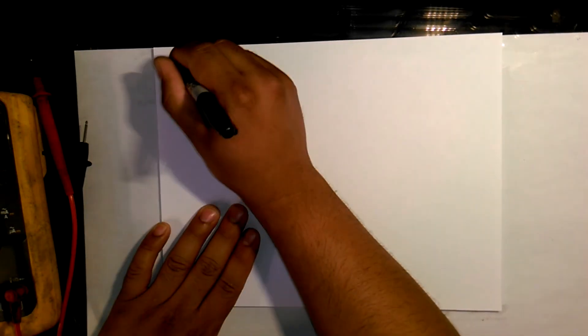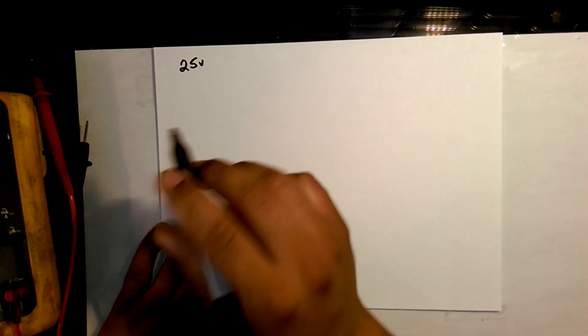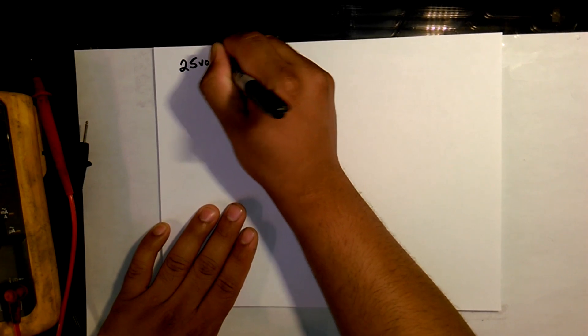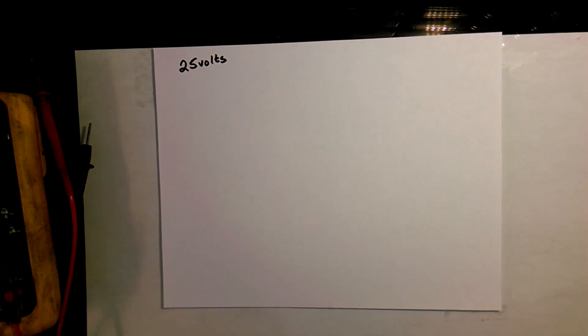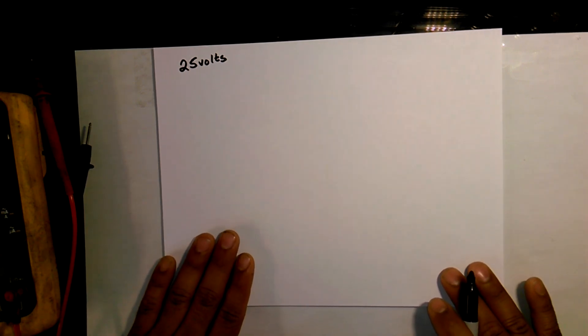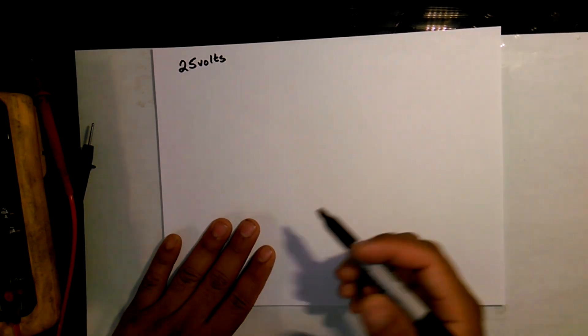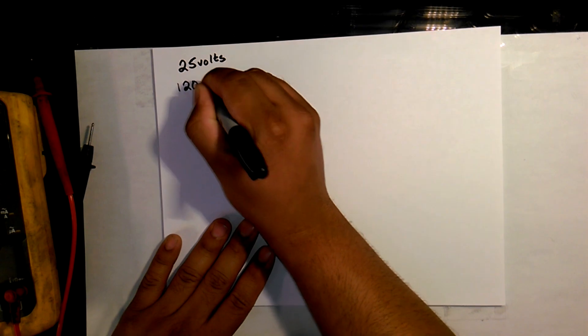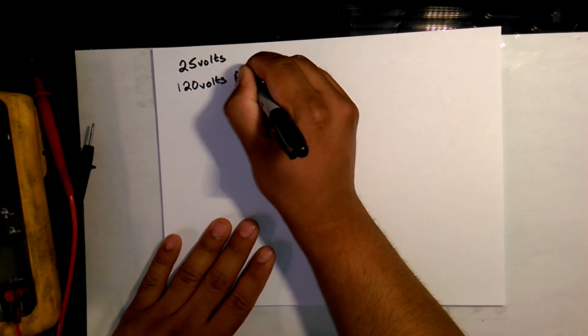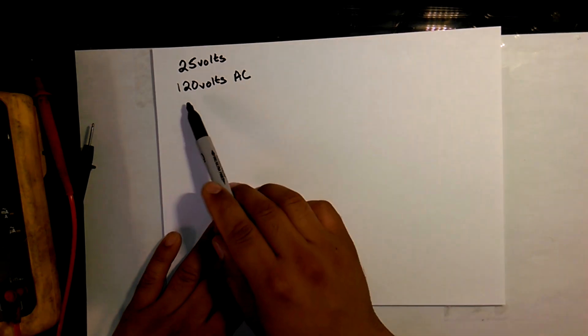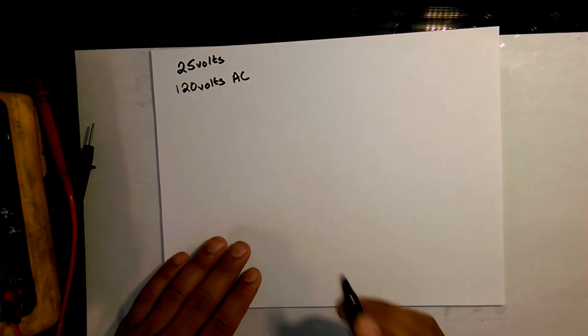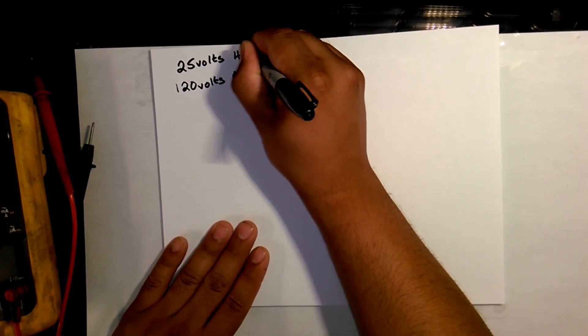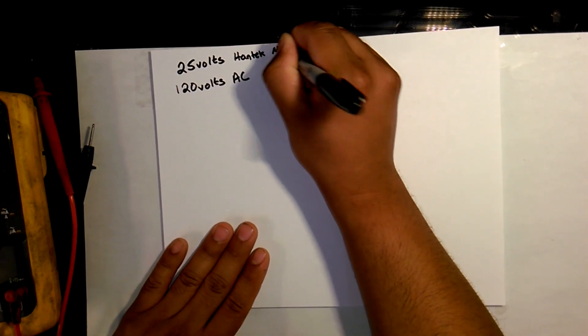The Hantek has a maximum rating or maximum input rating of about 25 volts. I'm not sure if it's exactly that, but that is a good rule of thumb. That's what I use, 25 volts. I will not put any more than 25 volts into my Hantek. If you live in North America, the wall outlet puts out approximately 120 volts AC. So obviously there's a big discrepancy here. Let's just write this out, Hantek max input.